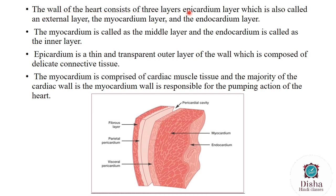The wall of the heart consists of three layers. The three layers present in the wall of the heart are: the epicardium, which is also called the external layer; the myocardium, which is the middle layer; and the endocardium, which is the inner layer. The epicardium, or external layer, is thin and transparent and is composed of delicate connective tissue. This thin transparent layer is also connected to the pericardium, which consists of connective tissue.